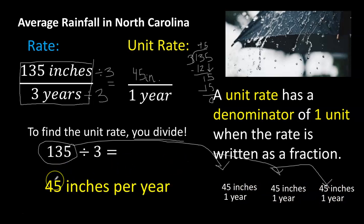And you write the unit rate at the end like this. Notice we don't have a one here. You would not put a one here because since there's no 's' on the end, it's just understood that that represents one year. So you don't have to write the one. The normal way to write this is to write 45 inches per year. So that's the average rainfall in North Carolina, 45 inches per year.